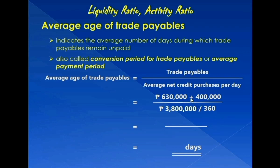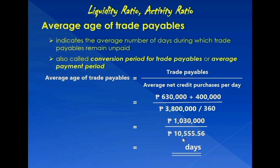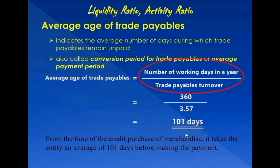630,000 plus 400,000 equals 1,030,000. 3,800,000 divided by 360 equals 10,555.56. 1,030,000 divided by 10,555.56 gives us 98 days as the average age of trade payables. This figure, however, is not exactly the same as the 101 days we arrived at using the first formula.